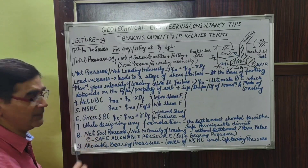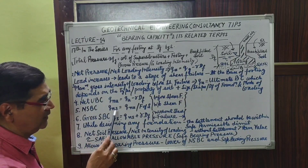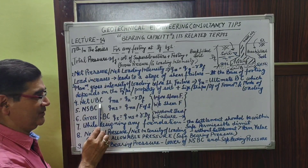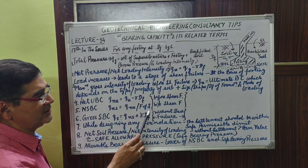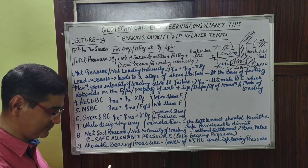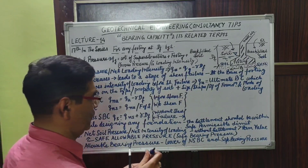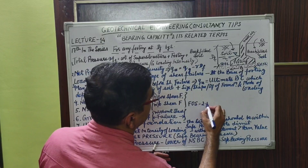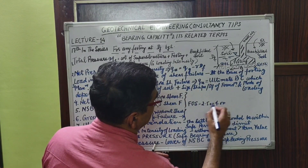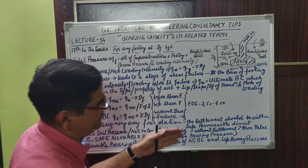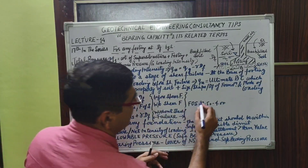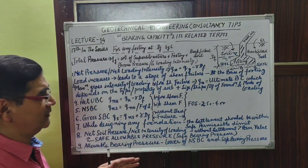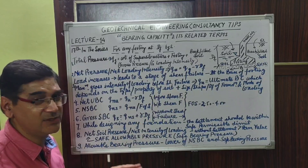Net safe bearing capacity is worked out by applying a factor of safety on the net ultimate bearing capacity. This factor of safety generally varies from 2.5 to 4 in different textbooks, but as per the National Building Code it is generally taken as 2.5. However, it actually depends upon the site conditions and the time of year when soil investigation was done.